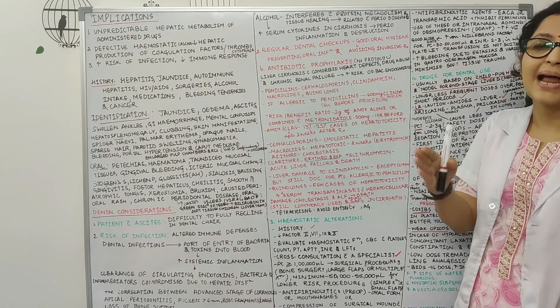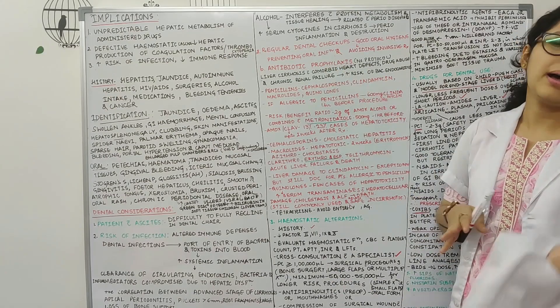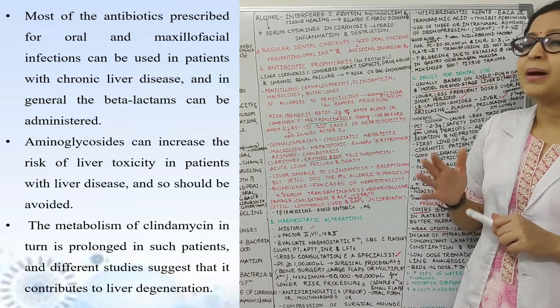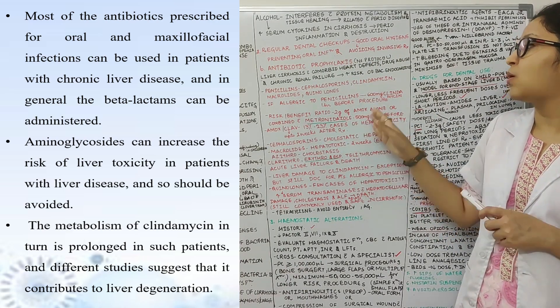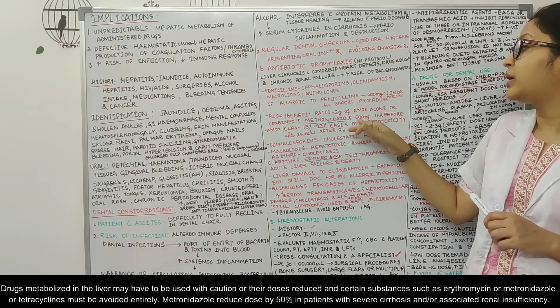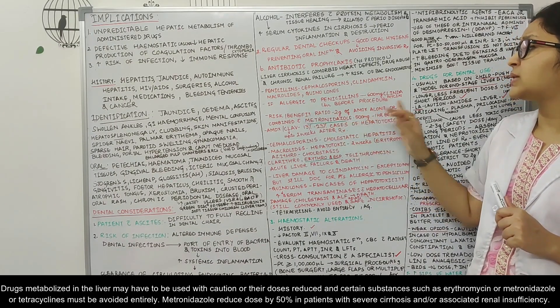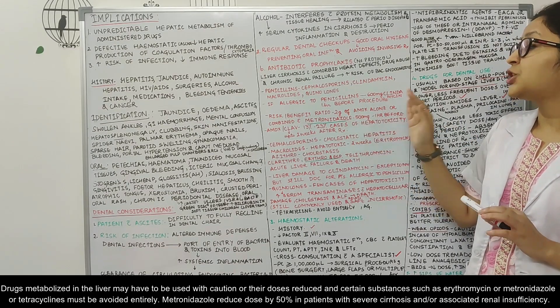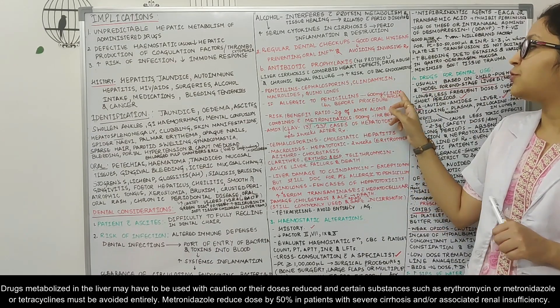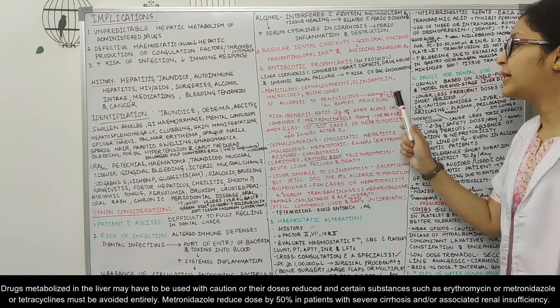There is no as such specific antibiotic prophylaxis protocol which is there for liver patients but the regular drugs that we give, that is penicillin or metronidazole, can be given in such patients. 500 mg one hour before the procedure or two grams of amoxicillin alone can be given to such patients. If the patient is allergic to penicillins, 600 mg of clindamycin can be given one hour before the procedure.